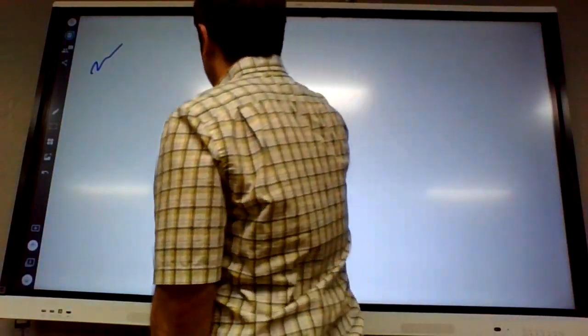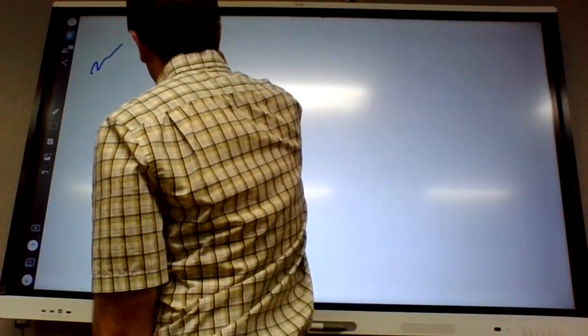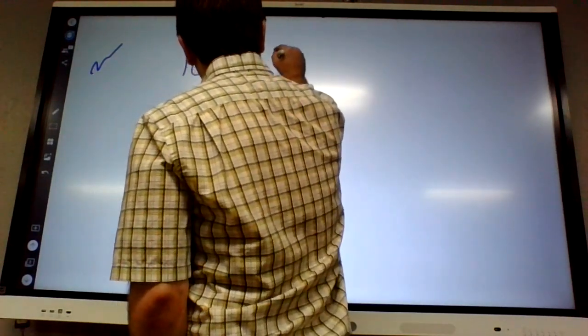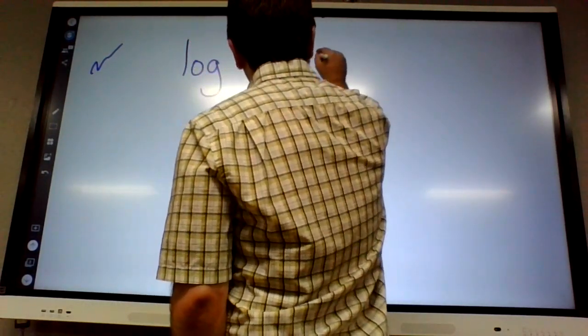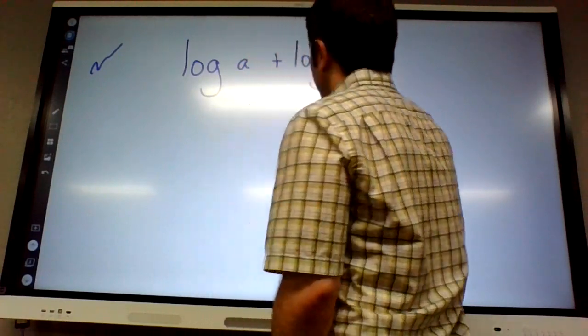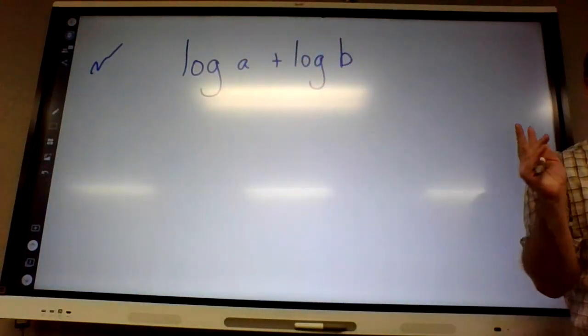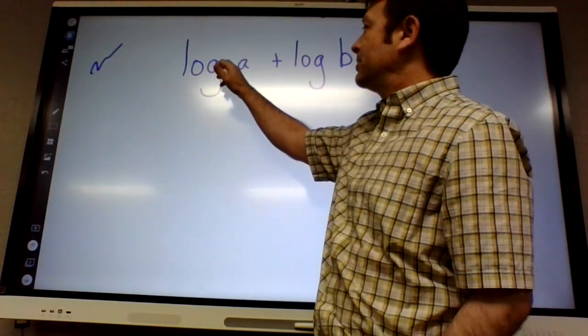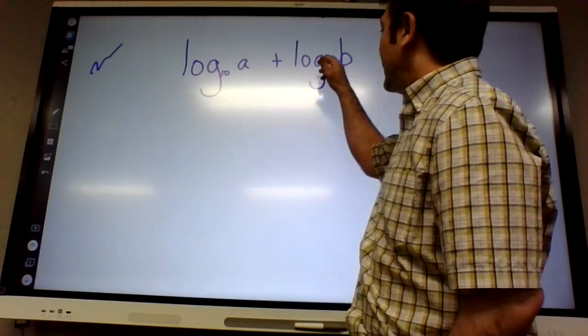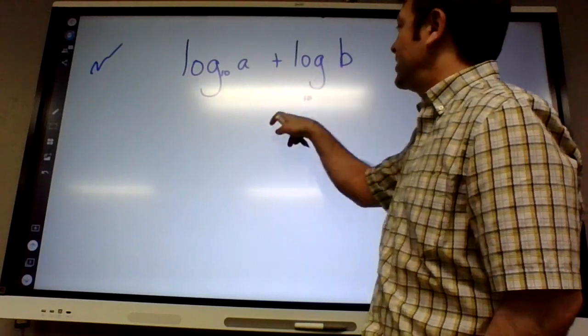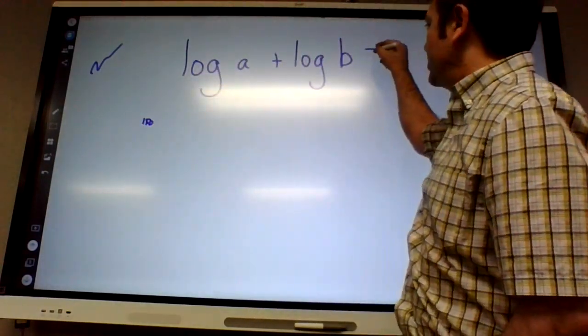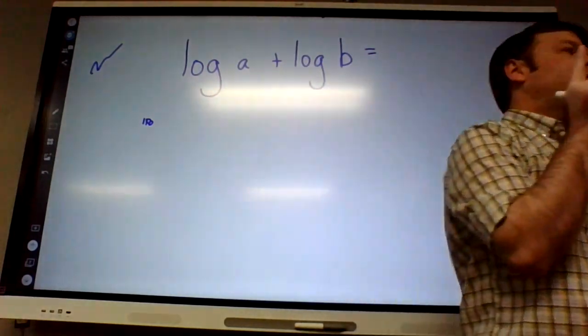All right, so we're talking about laws of logarithms. Now by the way, these tricks only work when the log is the same base. What's the base of this log right here? 10. Actually, if there's nothing there, there's a little invisible 10. So these tricks only work when the log is the same base.